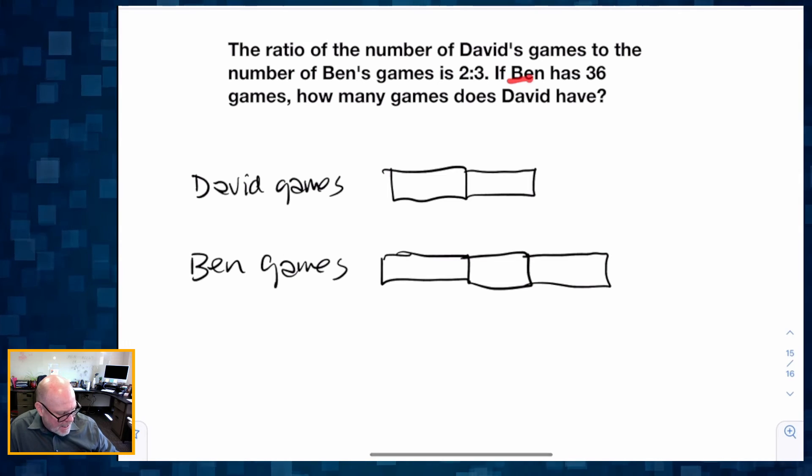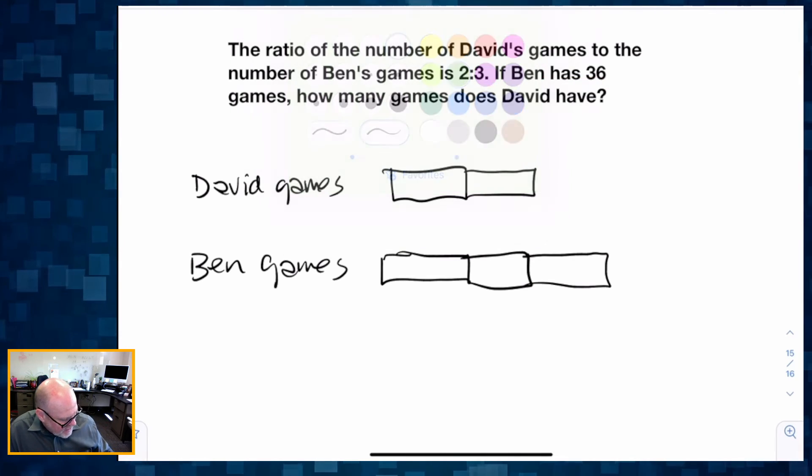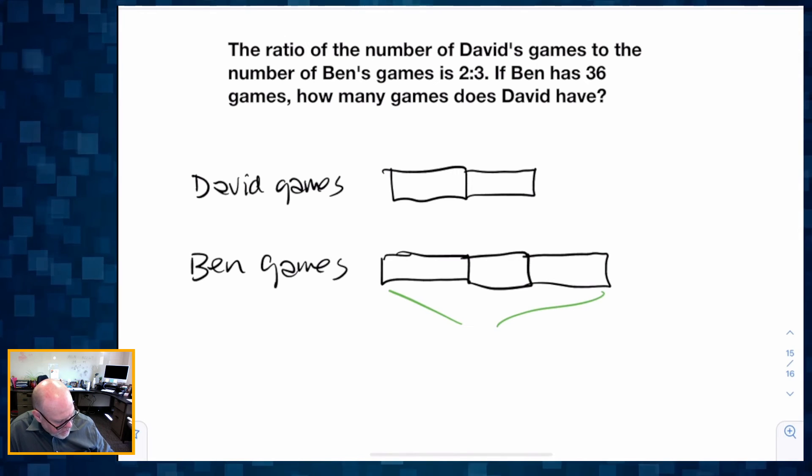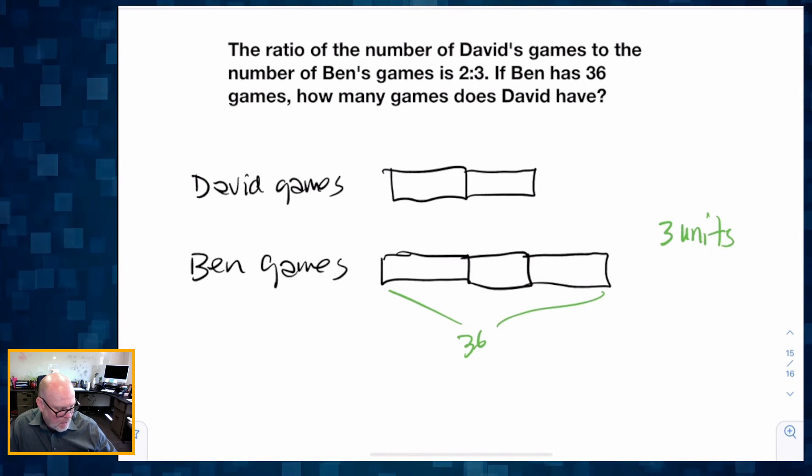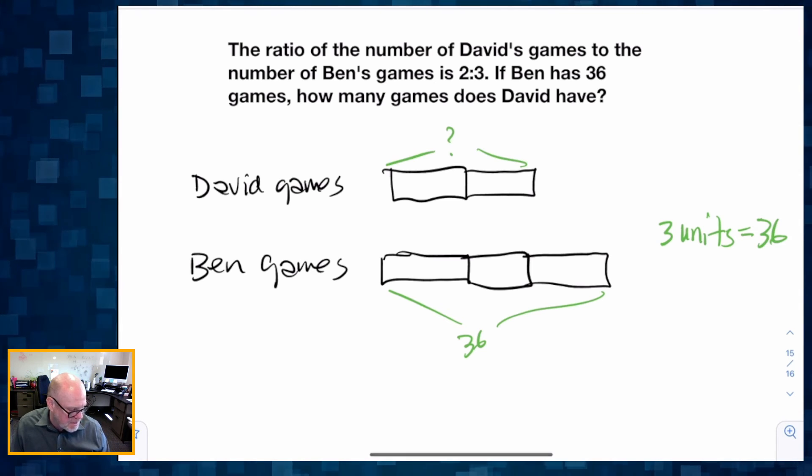Completing the story here, it says Ben has 36 games, so these three units right here represent 36. Three units represents 36 games. And it says how many games does David have? So we want to know how many games does David have.